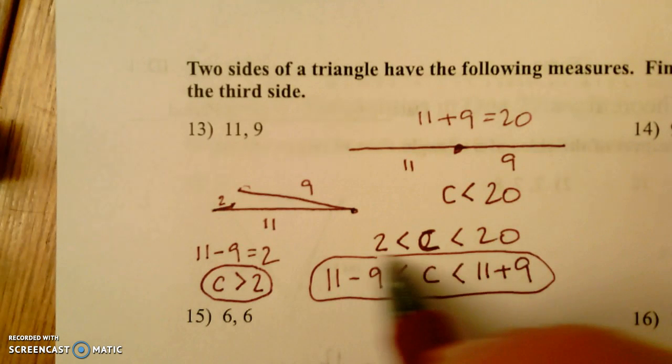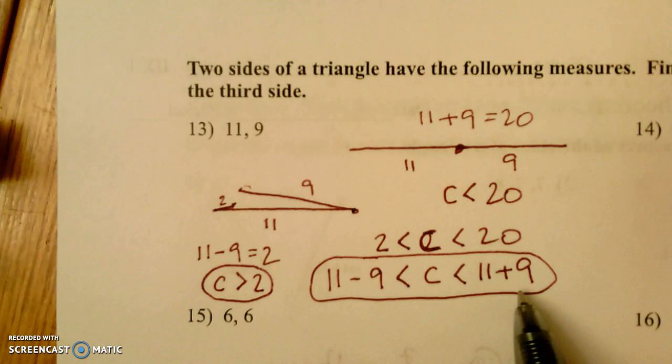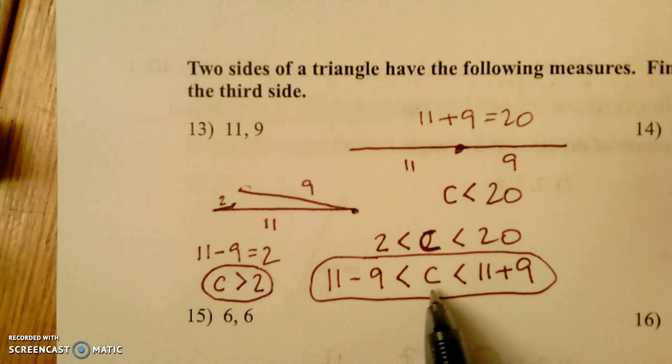So the way to find the range of the third side is you take the two sides you have, find their difference and then their sum, and your third side has to be between their difference and their sum.